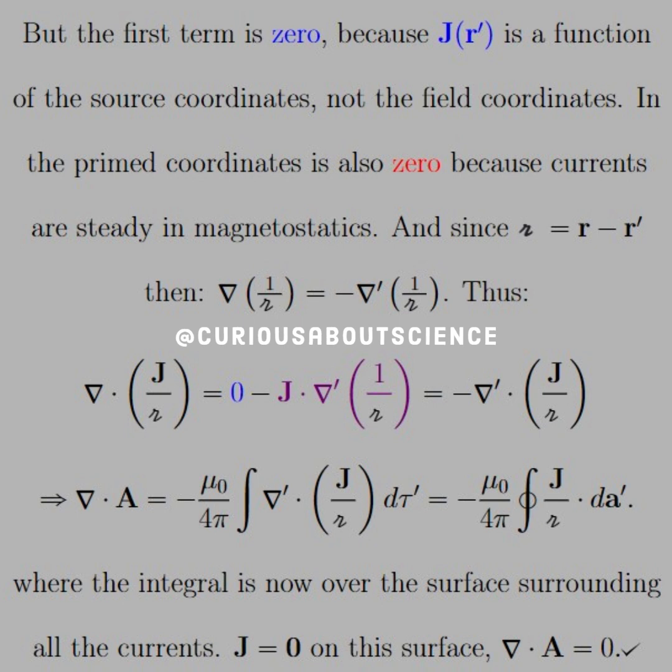And then we have minus, and we substitute in that del of 1 over r is equal to negative del prime of 1 over r. But that's exactly what we see in the second product rule.